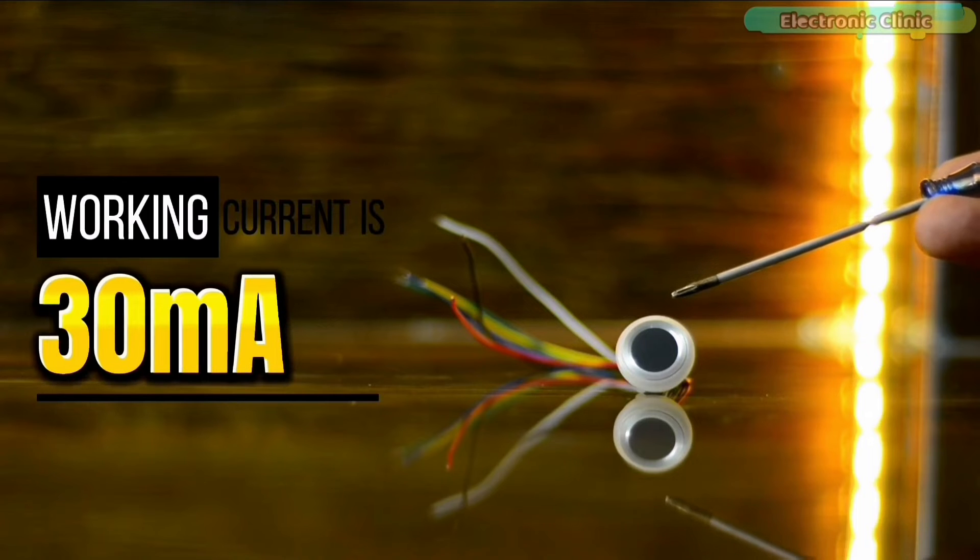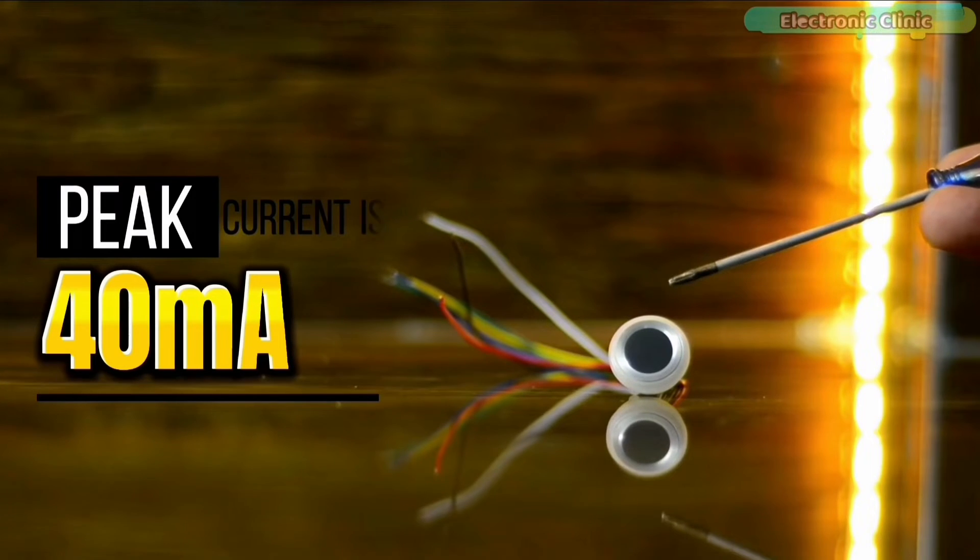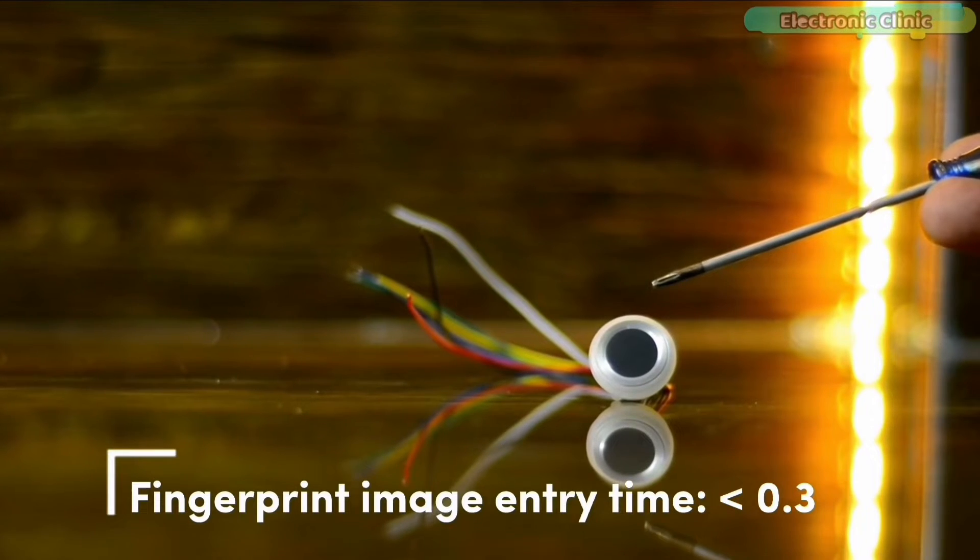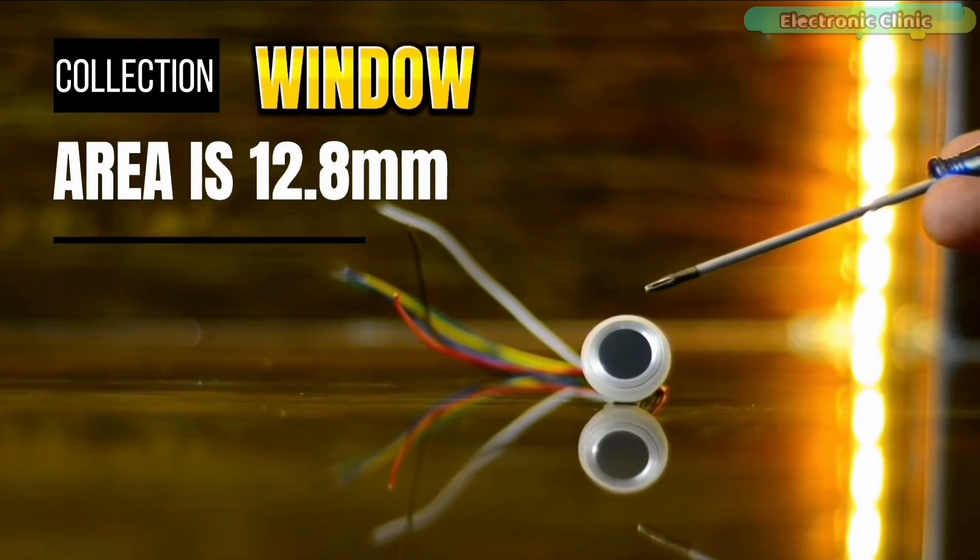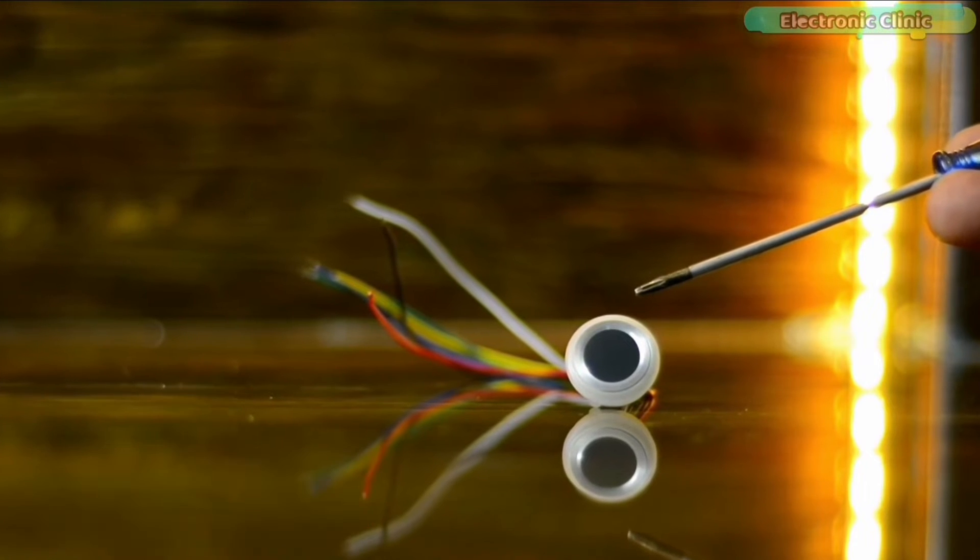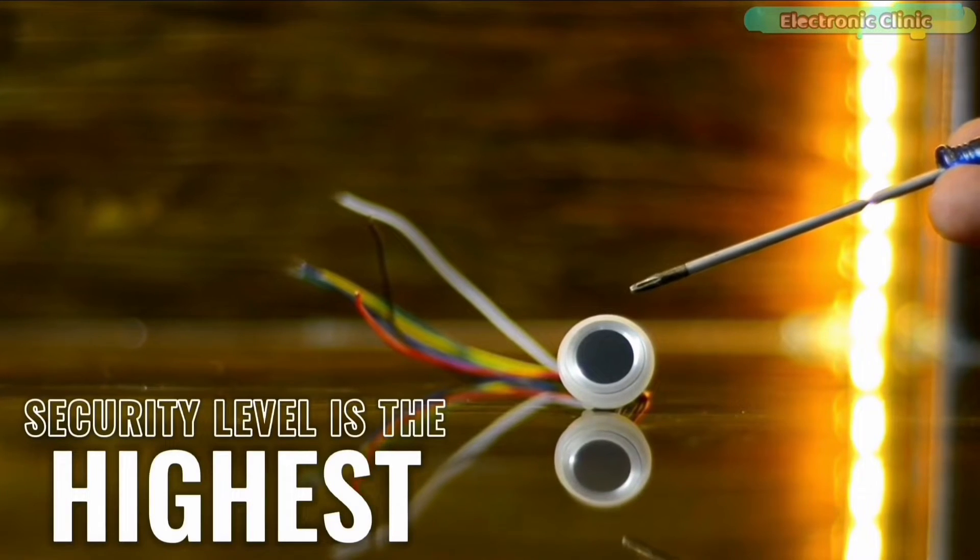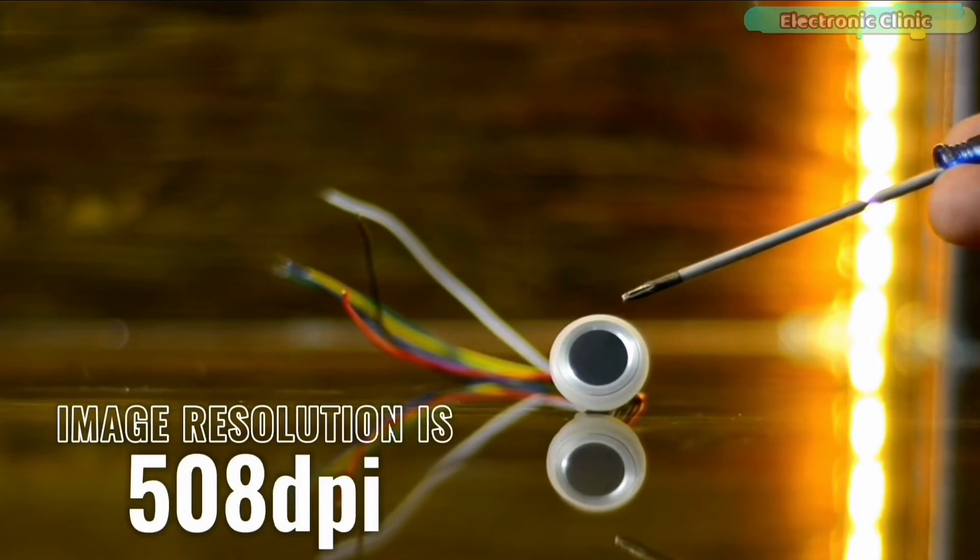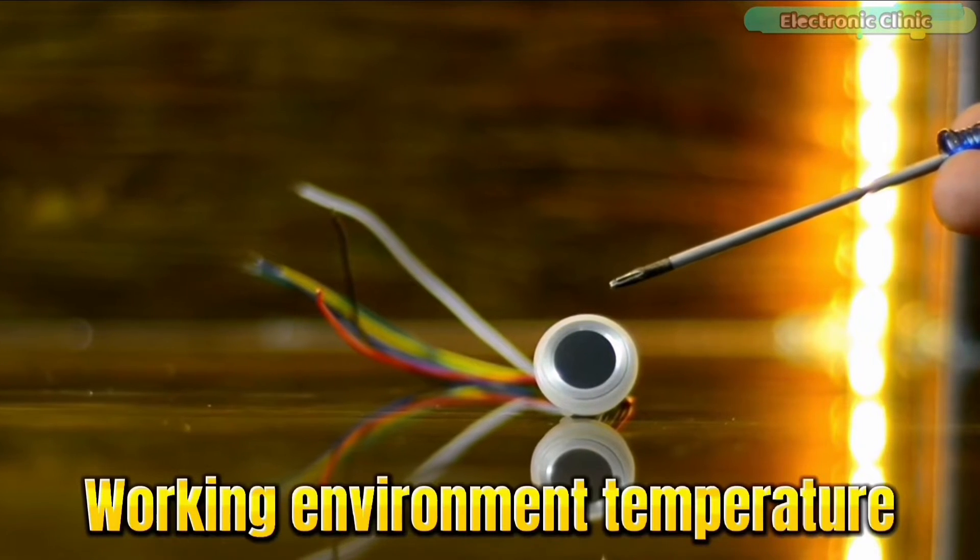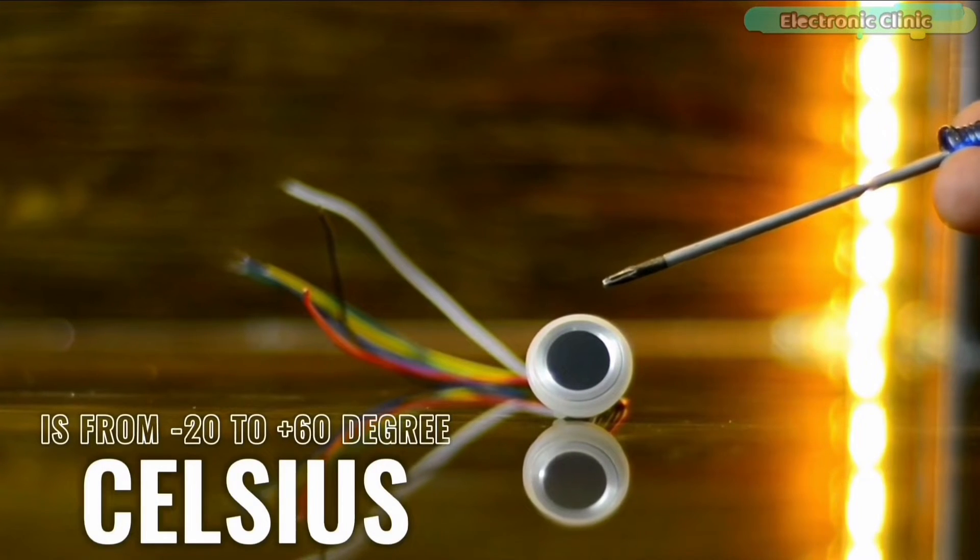Supply voltage is 3.3 volts, working current is 30 milliamps, peak current is 40 milliamps, fingerprint image entry time is less than 0.3 seconds, collection window area is 12.8 millimeters in diameter, security level is the highest, image resolution is 508 dpi, working environment temperature is from minus 20 to plus 60 degrees Celsius.